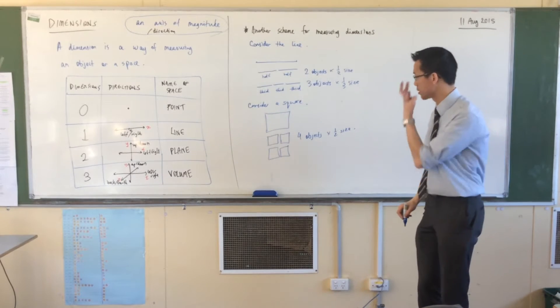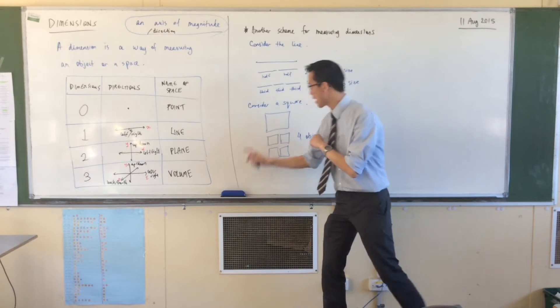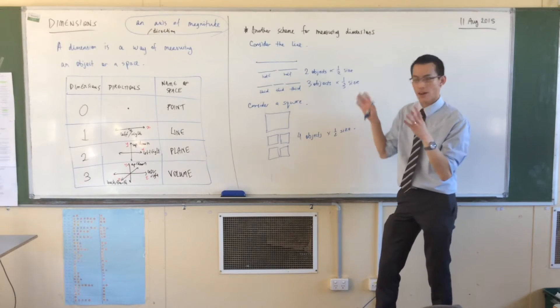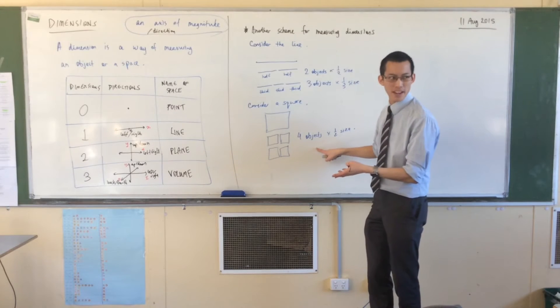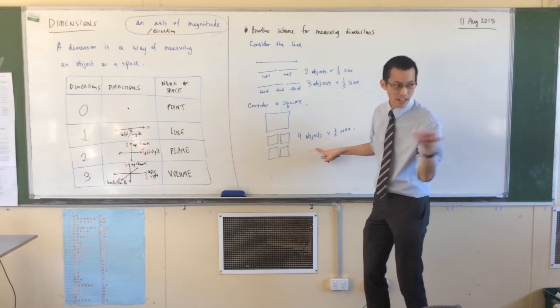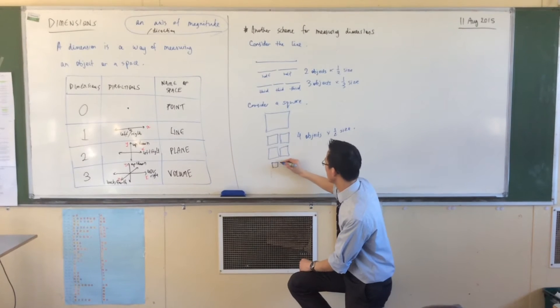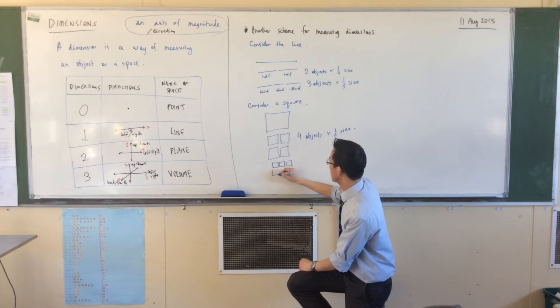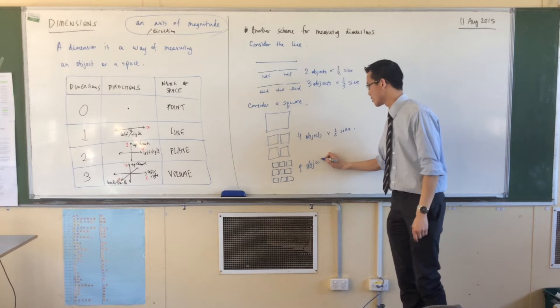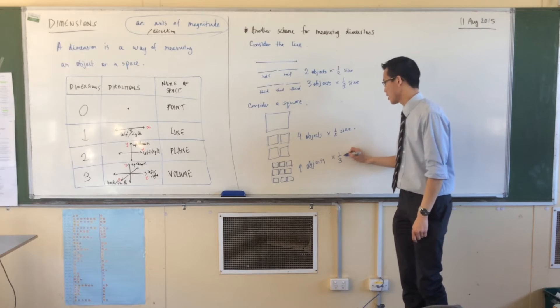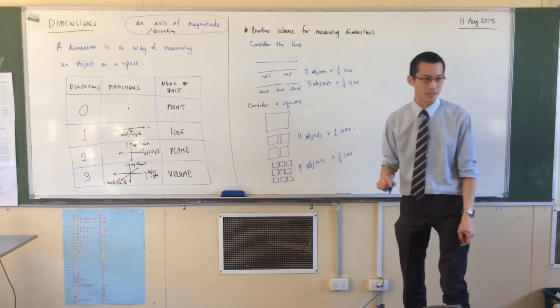So I've got four objects that are half the size. Four objects. Now, you can see what happens if I apply this similar logic up here, right? If I divide it into objects that are a third the size, how many of them am I going to get? I'm going to get nine of them. Let's just quickly draw here. Nine objects that are a third the size.